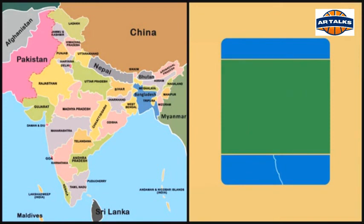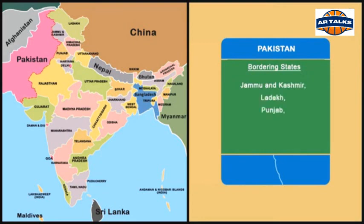The Indian states Jammu and Kashmir, Ladakh, Punjab, Rajasthan and Gujarat share the border with Pakistan. The border length is 3,323 km.